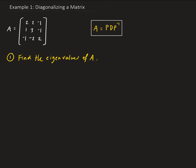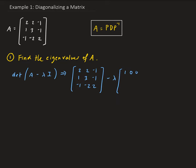We need to find the determinant of A minus lambda I. So we have the matrix with entries 2, 2, negative 1, 1, 3, negative 1, negative 1, negative 2, and 2, minus lambda times the 3 by 3 identity matrix. This gives us the matrix with diagonal entries 2 minus lambda, 3 minus lambda, and 2 minus lambda.